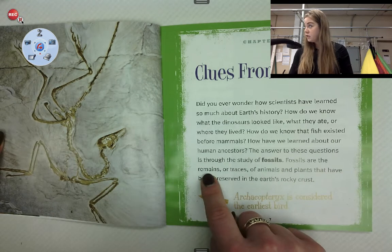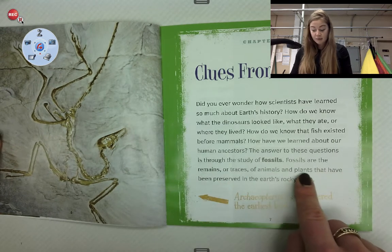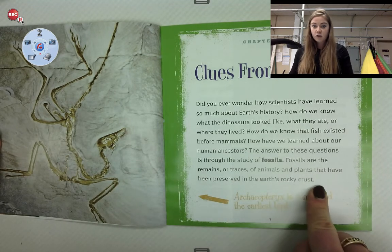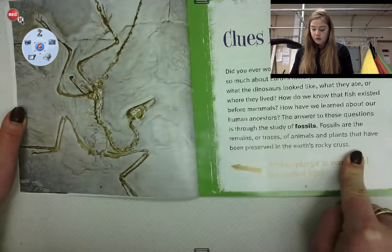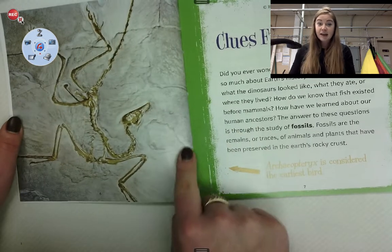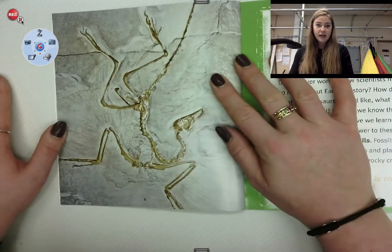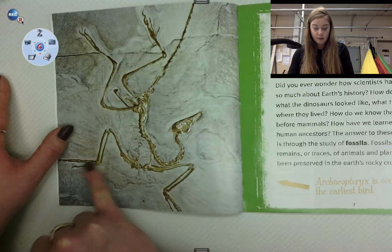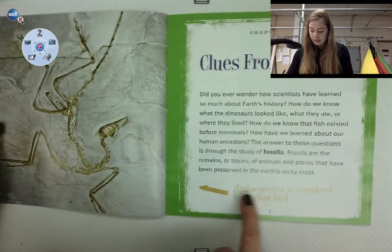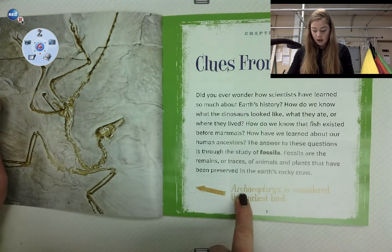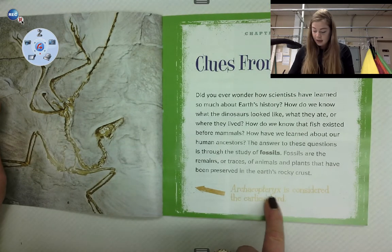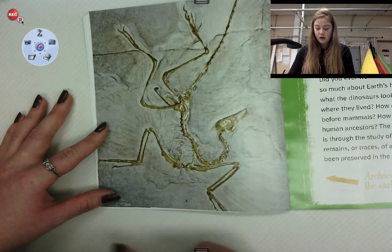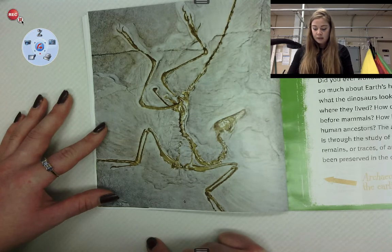Fossils are the remains or traces of animals and plants that have been preserved in the Earth's rocky crust. Now we're noticing here that this is a fossil — this kind of looks like what Mary Anning discovered. It looks like that winged creature, and I can tell just from the shape of the bones. This is the Archaeopteryx, and it's considered the earliest bird. Look at those wings — I can see that it is a winged bird.